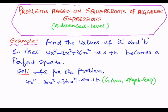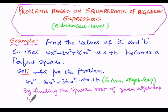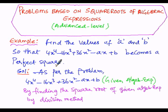If we are able to find out the square root and if its remainder is zero, then it will be a perfect square. So let us find out the square root by means of the division method, and from that we can find out the square root.